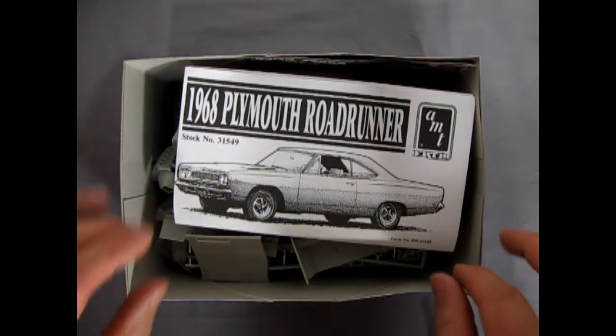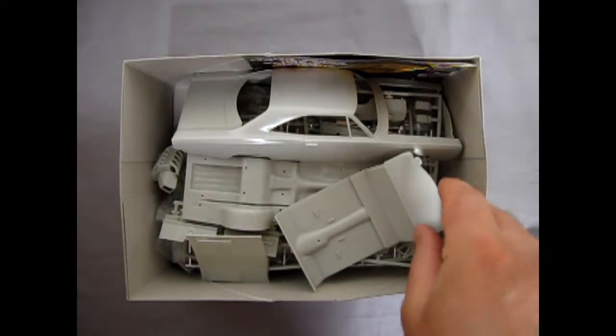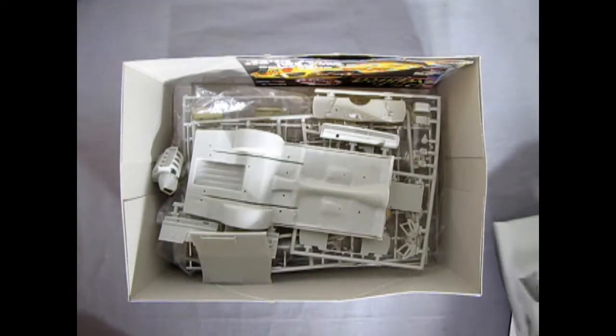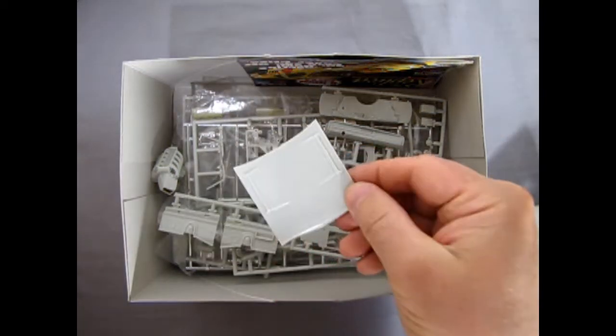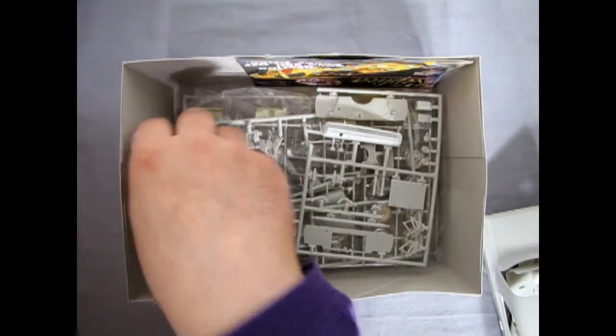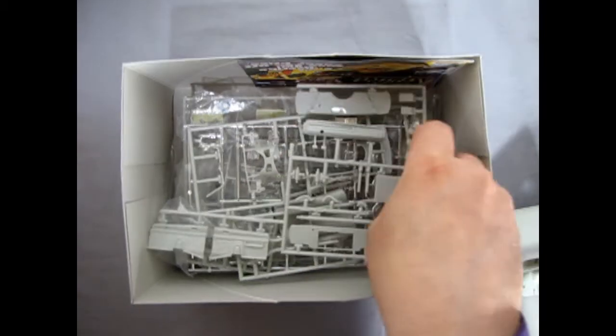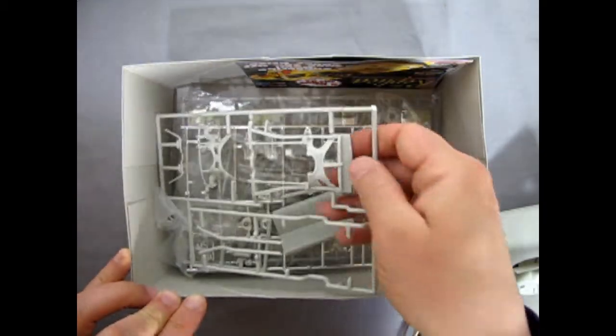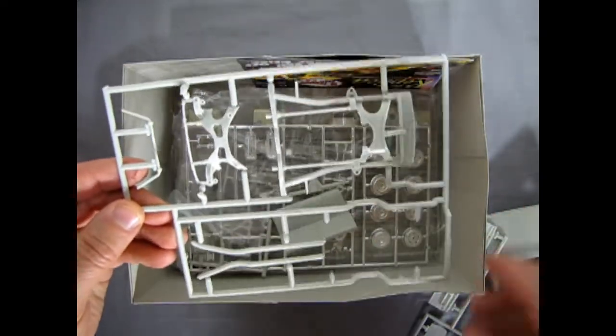I believe this is one of the model kits that was my wife's and she's working on it. We've got our instructions here, the interior, the body, the chassis pan, the hood, the big 426 under works here, and then a bunch of this stuff.